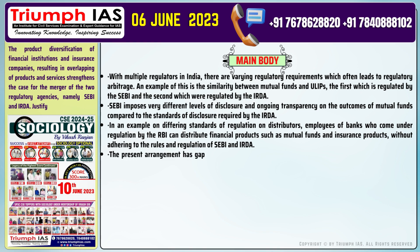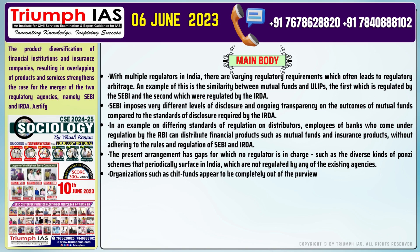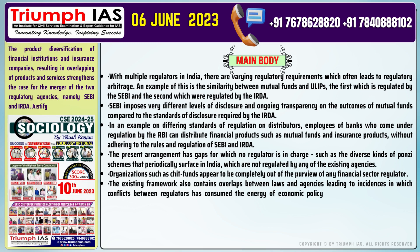Point 4: The present arrangement has gaps for which no regulator is in charge, such as the diverse kinds of Ponzi schemes that periodically surface in India, which are not regulated by any existing agency. Point 5: Organizations such as Chit Funds appear to be completely out of the purview of any financial sector regulator. Point 6: The existing framework also contains overlaps between laws and agencies, leading to conflicts between regulators that have consumed the energy of economic policymakers and held back market development.